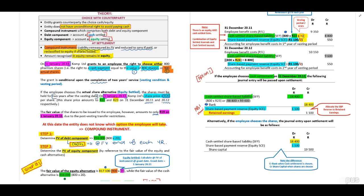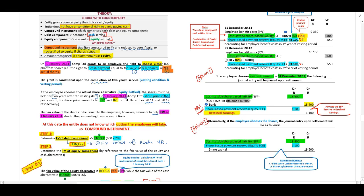Option two: if the counterparty decides to take shares, we debit the cash settled share-based liability with R18,400, debit the share-based payment reserve with R1,100, and credit share capital with R19,500 — the total combined value of both components.